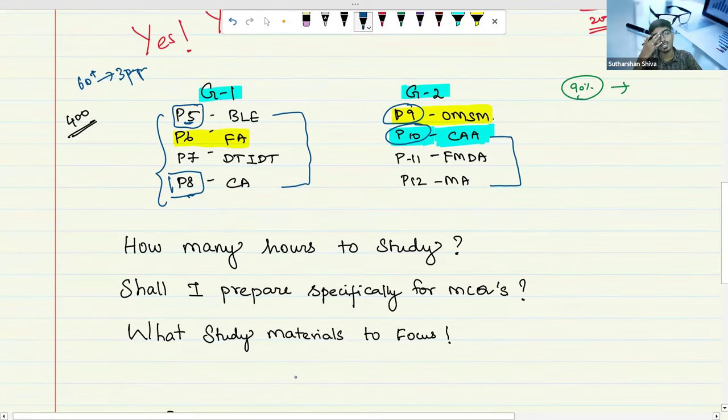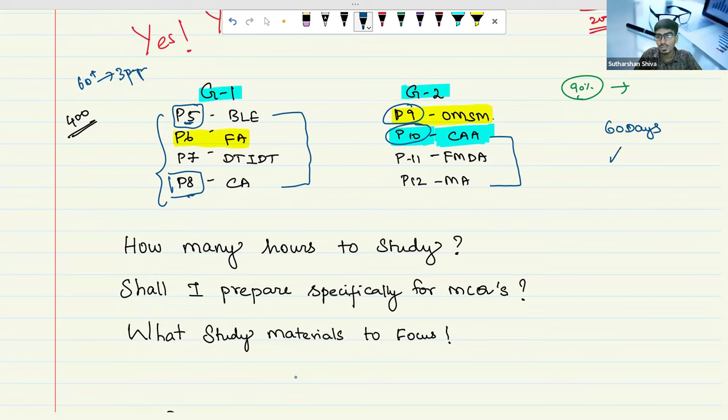The overall preparation strategy: on 60 days, if I am studying for both groups, I need to bifurcate into 30 plus 30. Equally you should give it. Or if you have advantage of exemption in any paper, you will slightly change it. On this 30 days, you need to set aside 4 to 7 days for your revision. It means available time for both papers is 24 plus 24, 48 days is there.